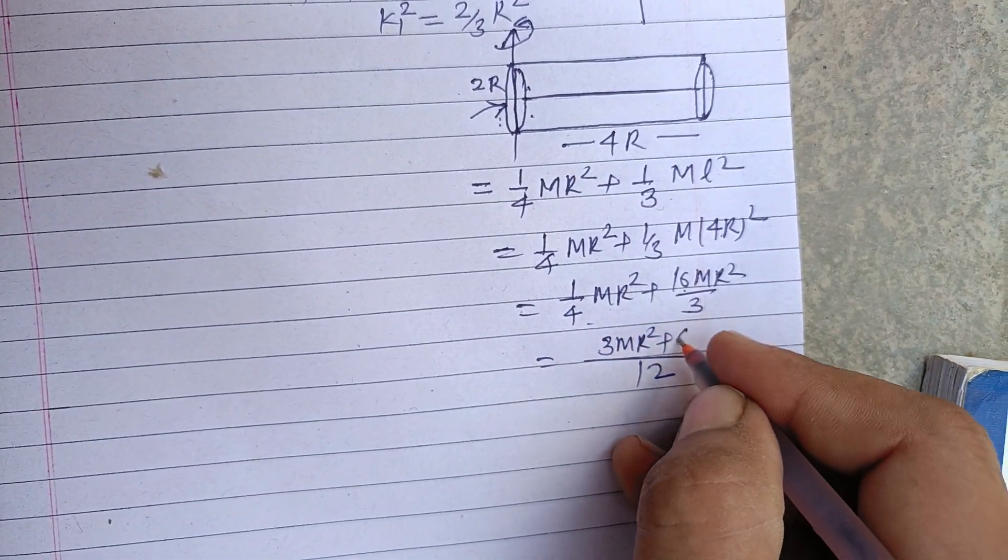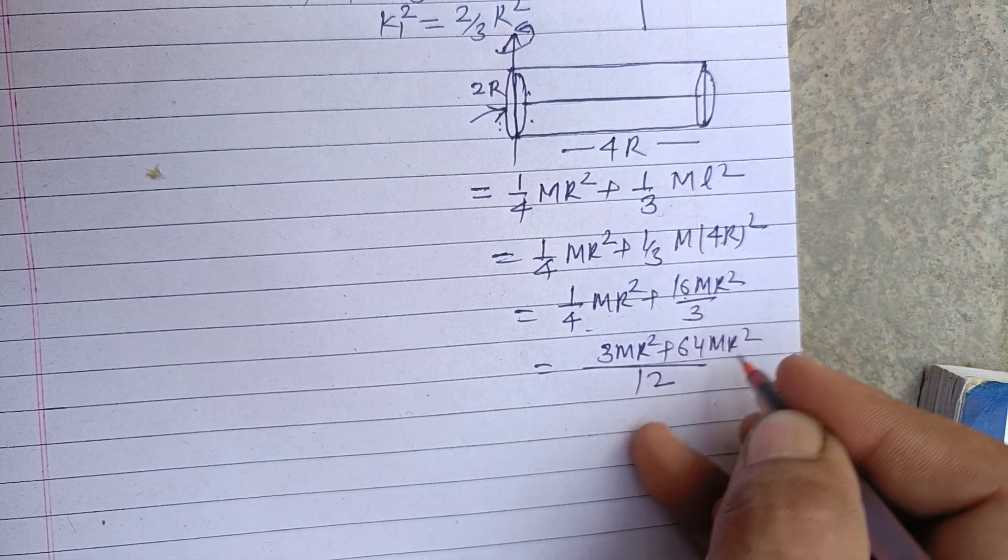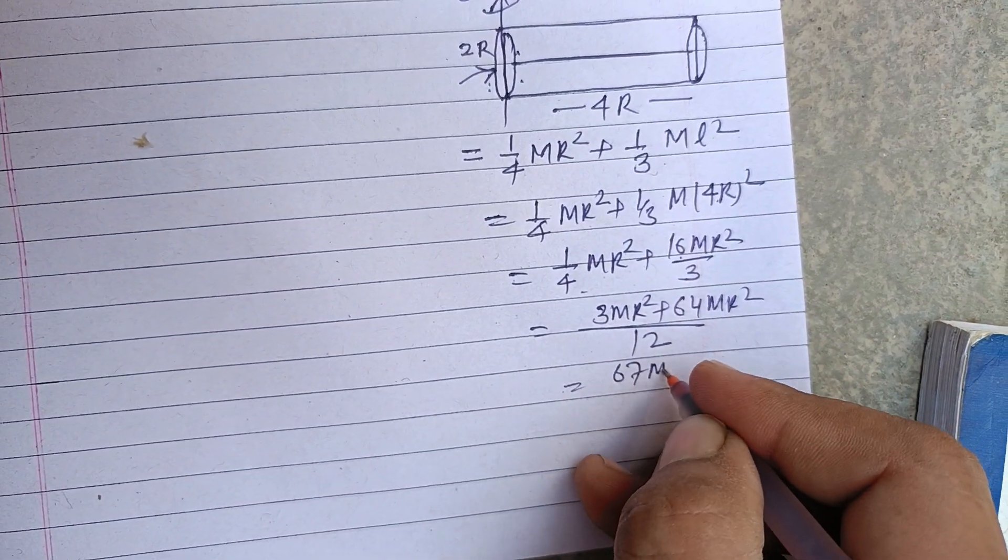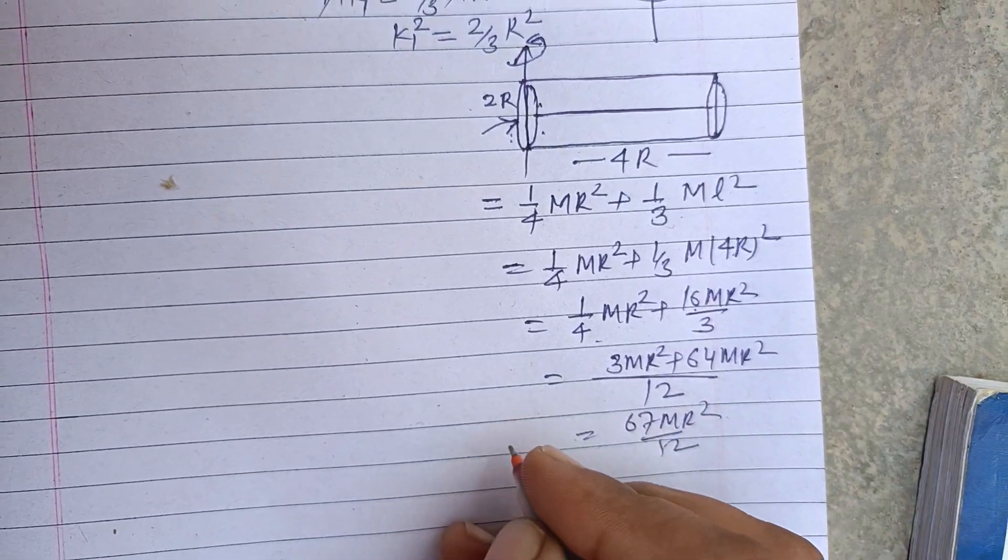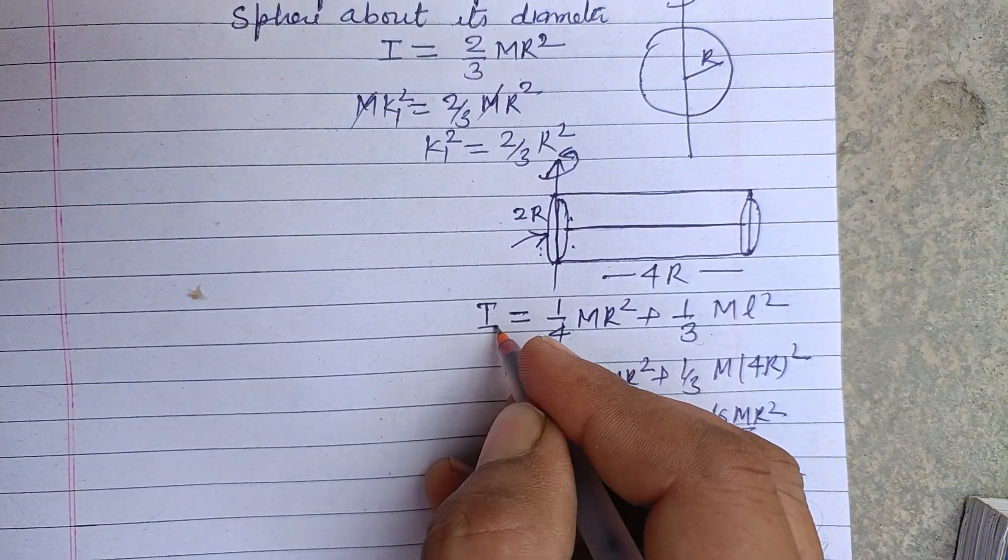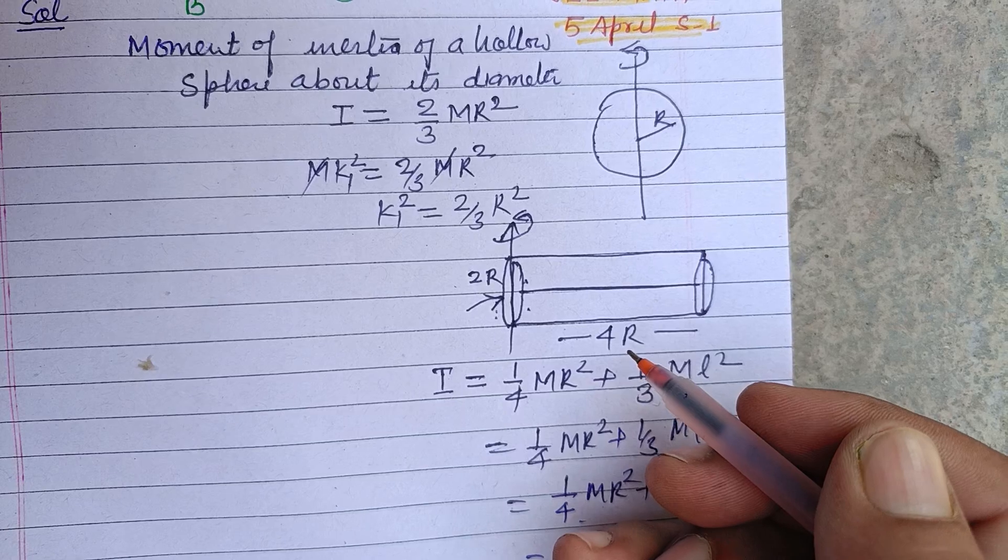So 3 plus 64 is 67mR²/12. This is the moment of inertia.